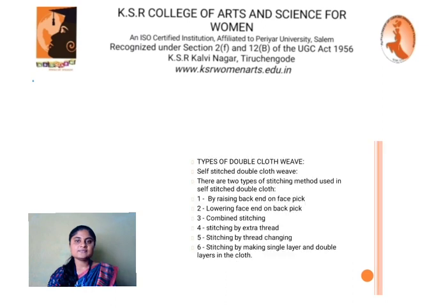Types of double cloth weave. There are two types of stitching methods used in self-stitched double cloth: 1. By raising back end on face pick. 2. Lowering face end on back pick. 3. Combined stitching. 4. Stitching by extra thread. 5. Stitching by thread changing. 6. Stitching by making single layer and double layers in the cloth.